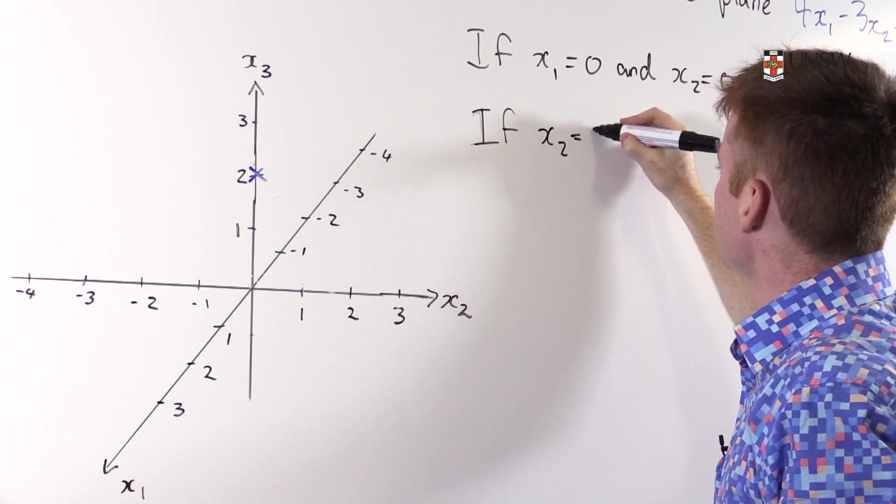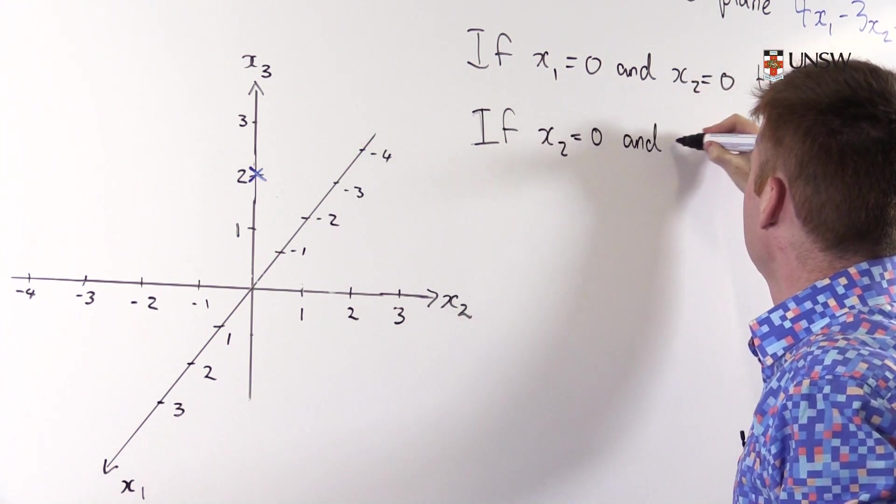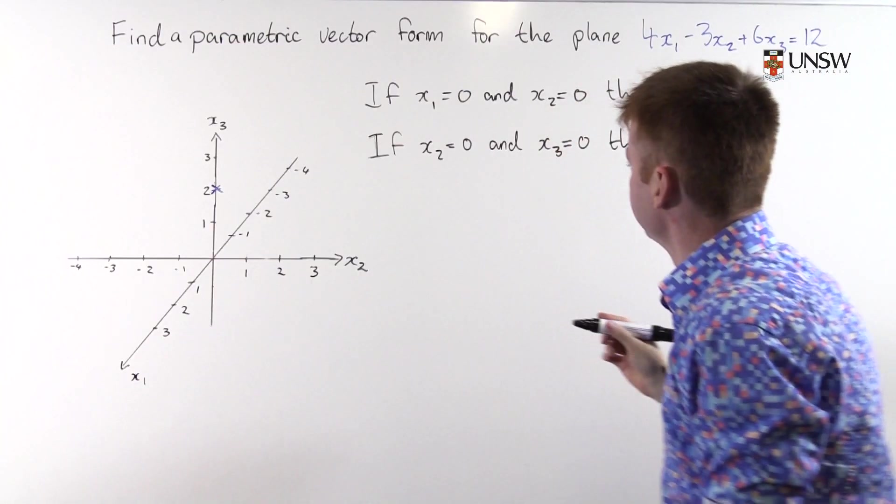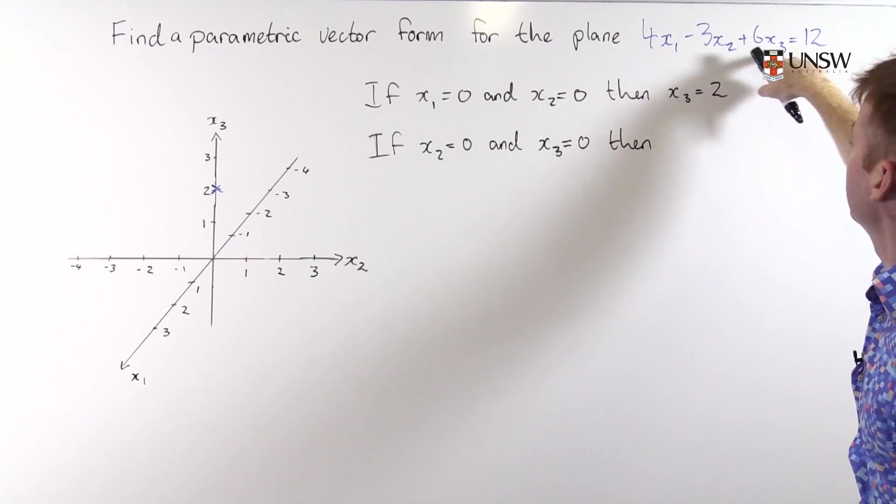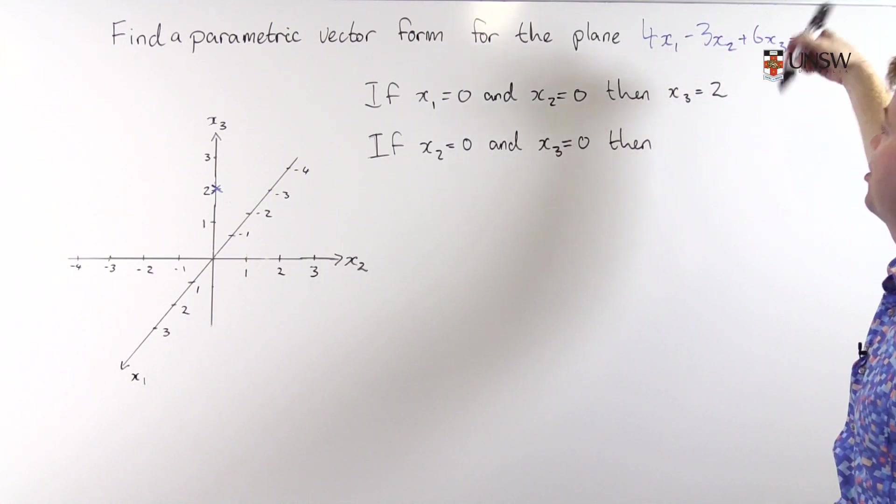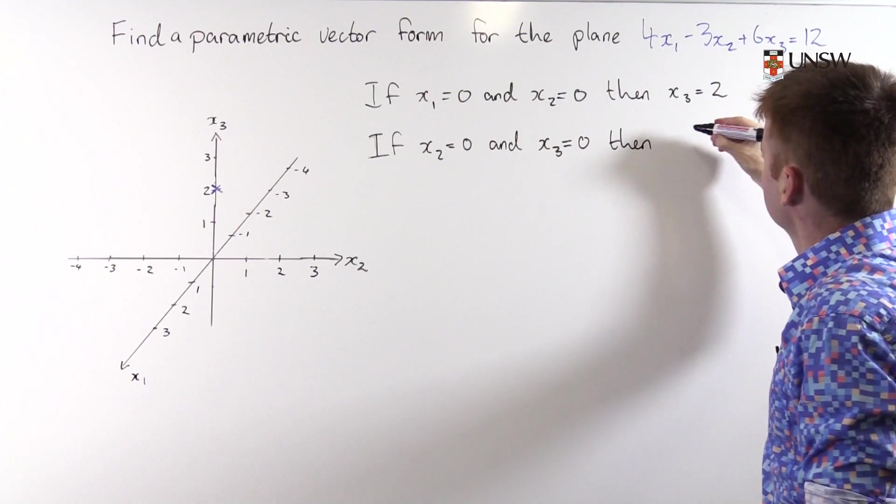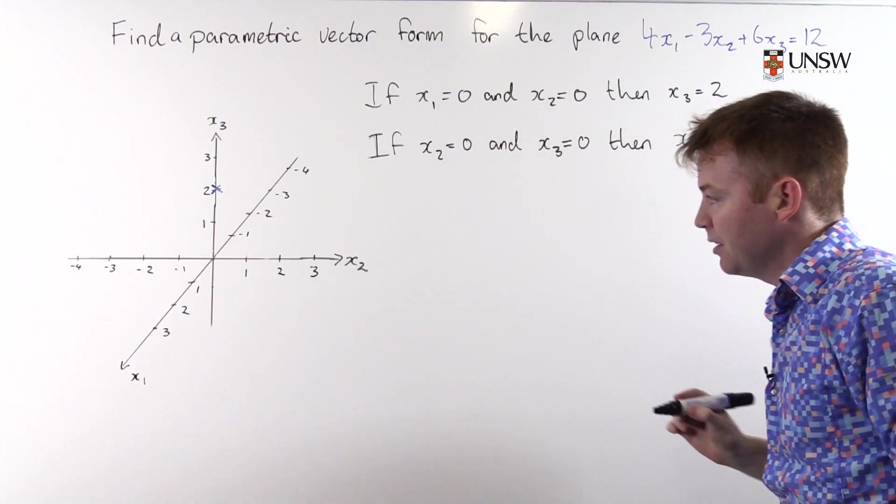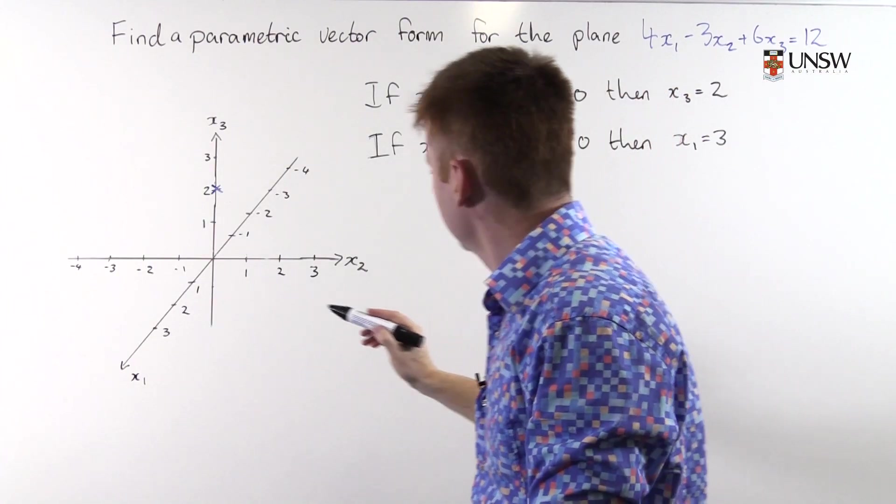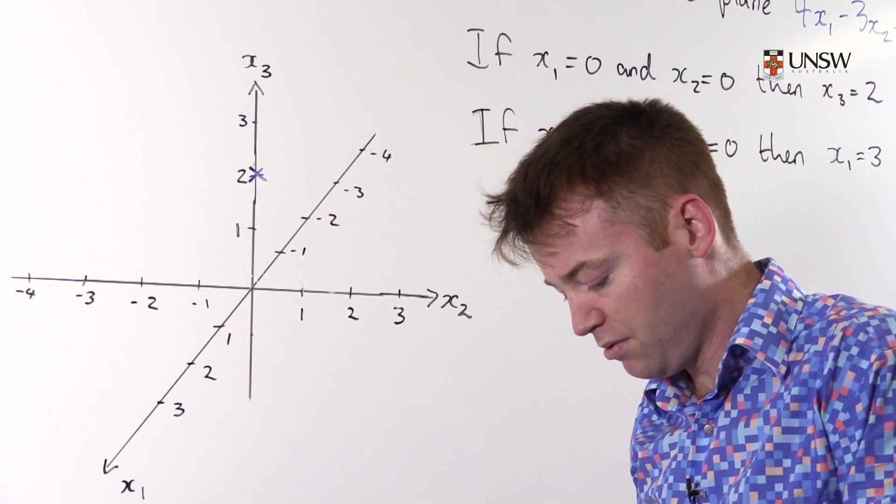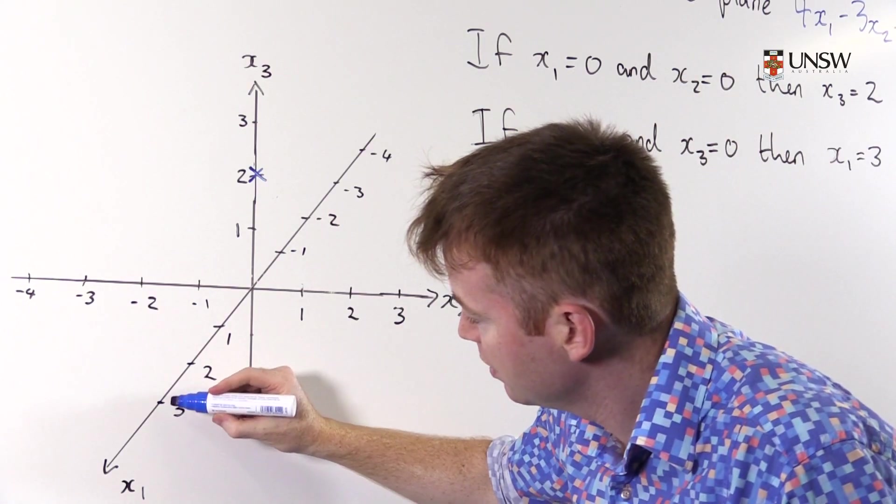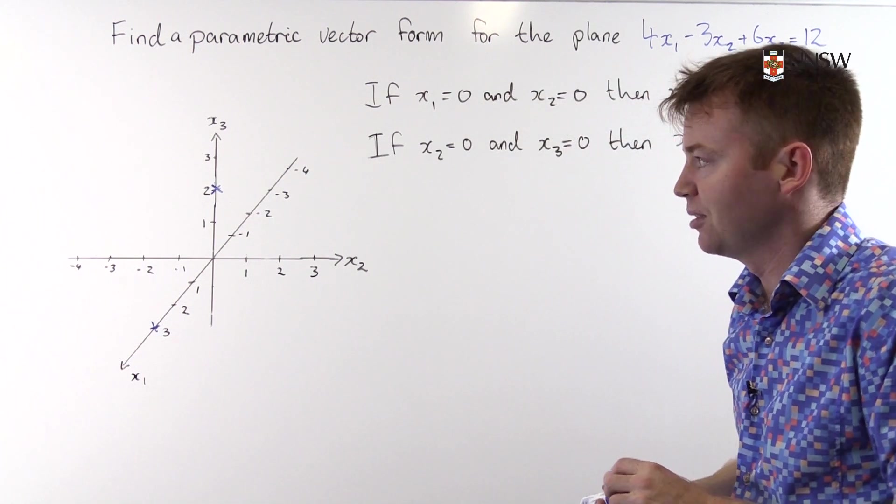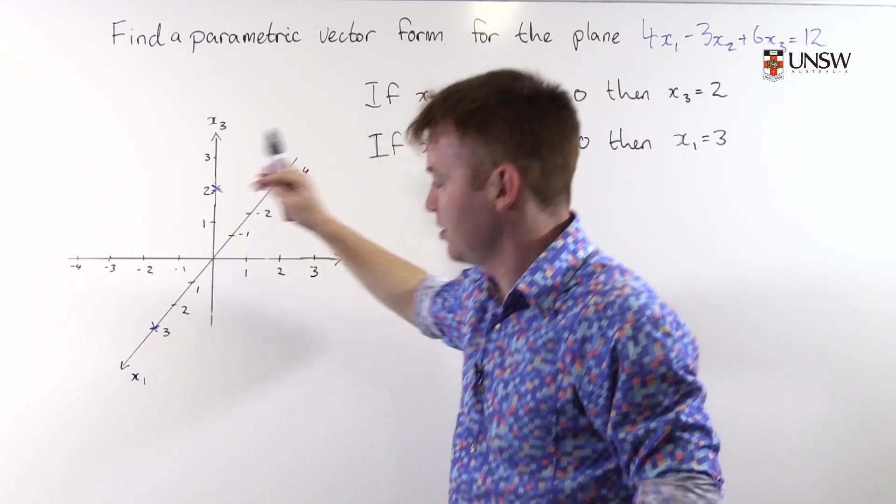If x₂ = 0 and x₃ = 0 then, if that bit's 0 and that bit's 0 then 4x₁ is 12 so x₁ must be 3. And we found another point on the plane with x₂ and x₃ equal to 0 and in blue here. We're getting a slightly better feeling for what this plane might look like. We've got now two points on this plane. Let's find a third.